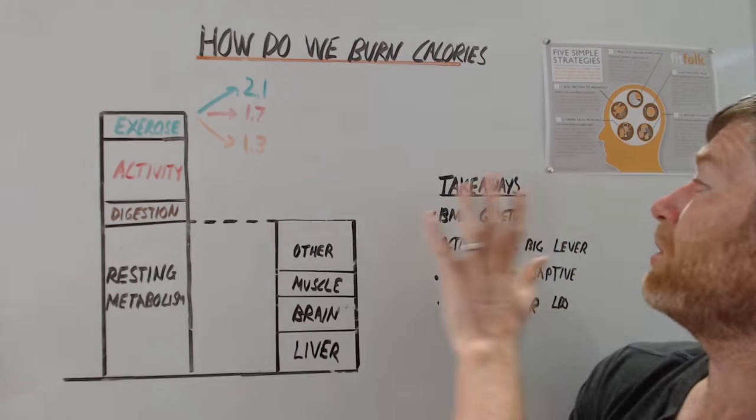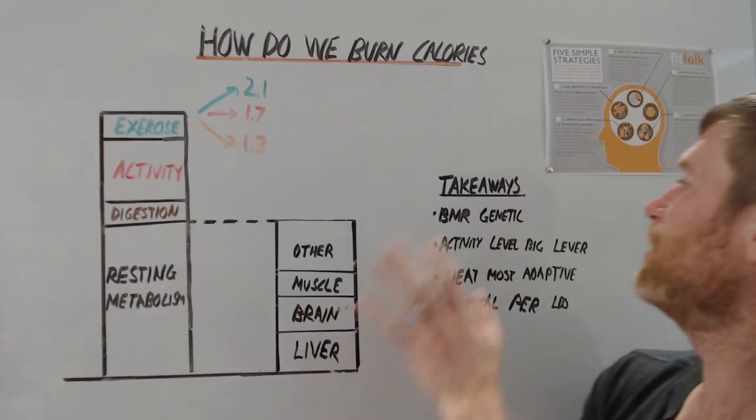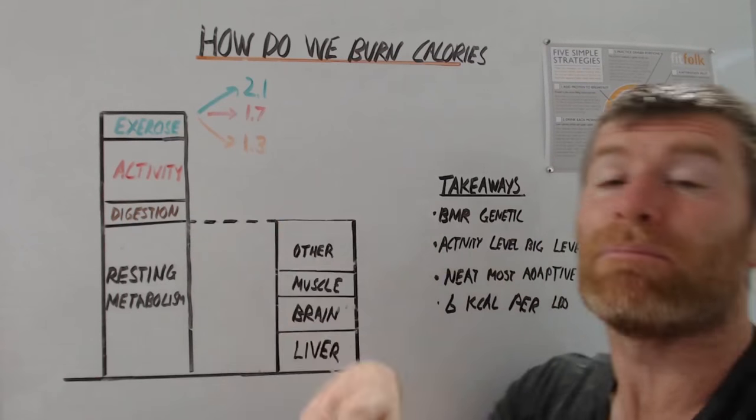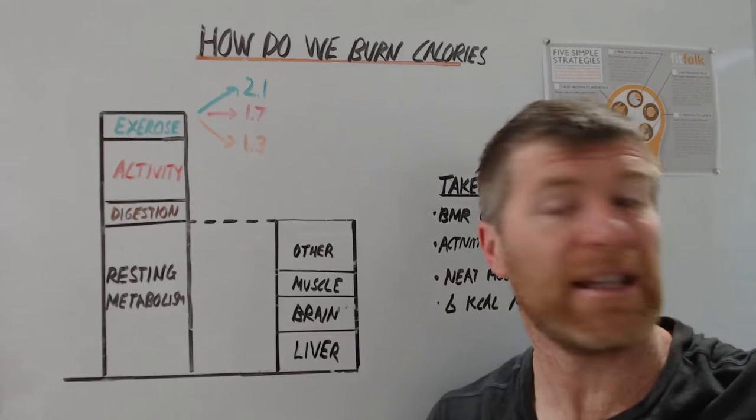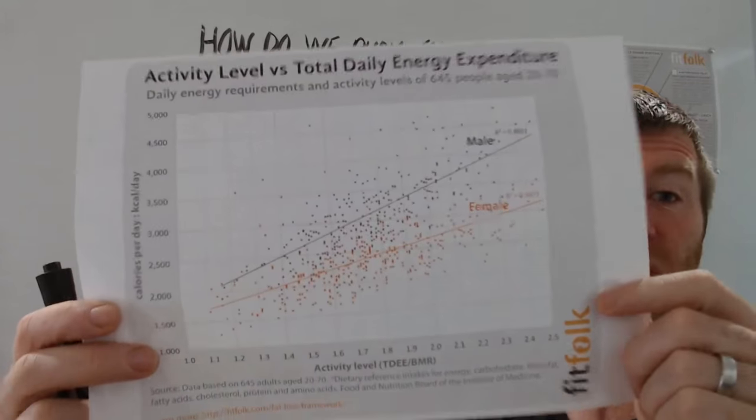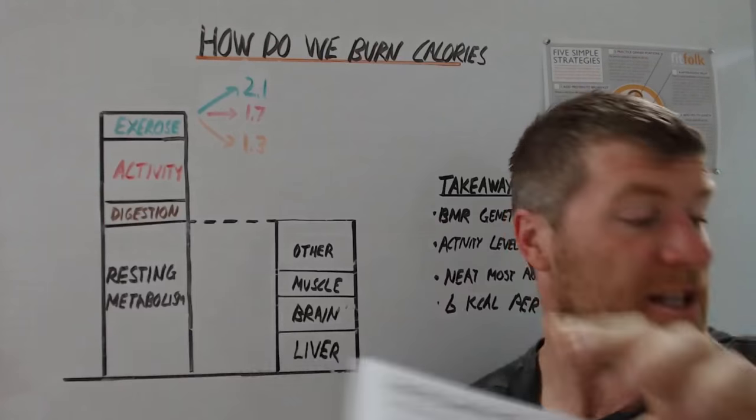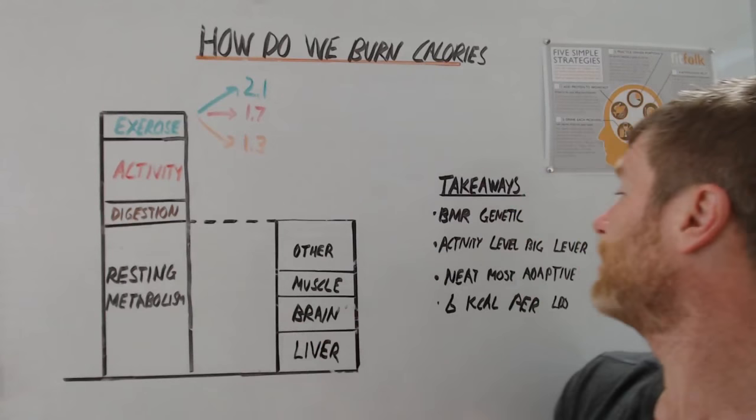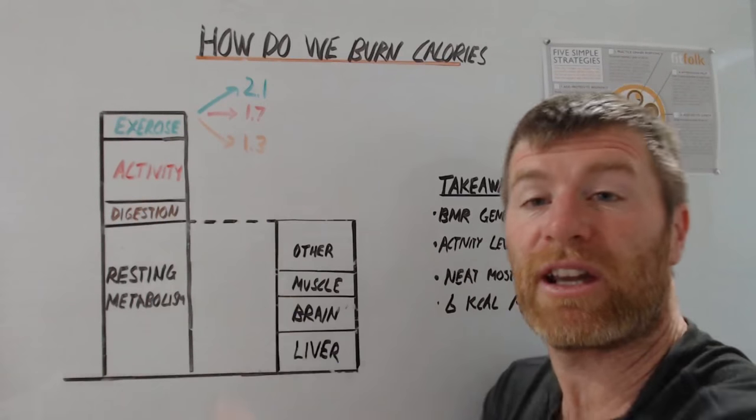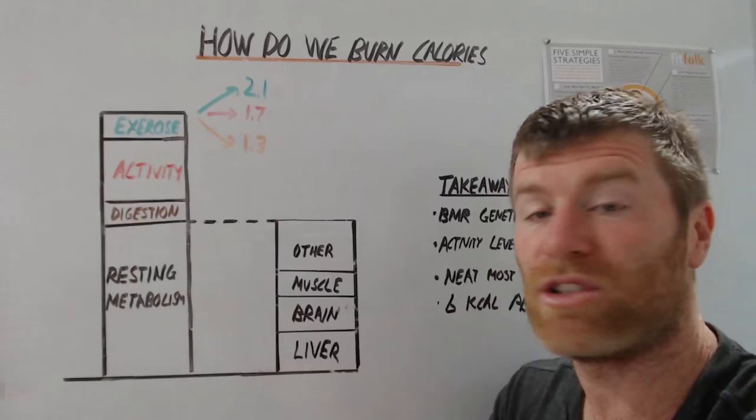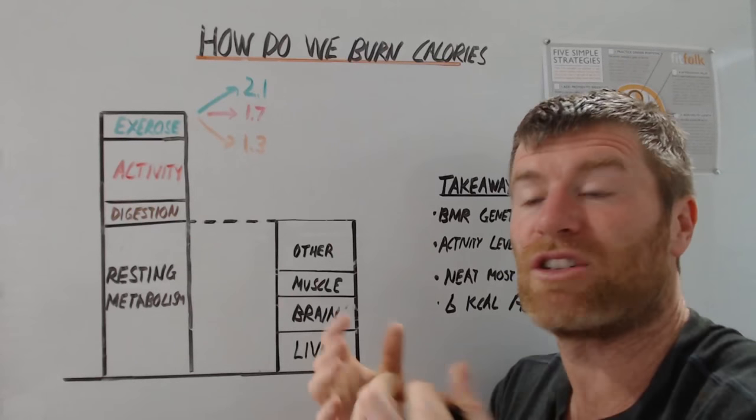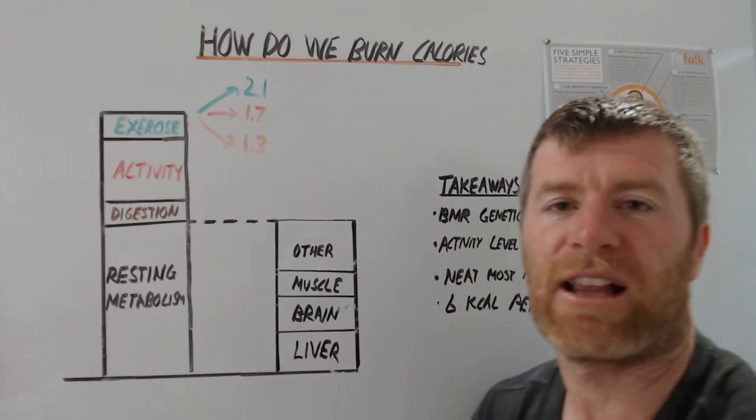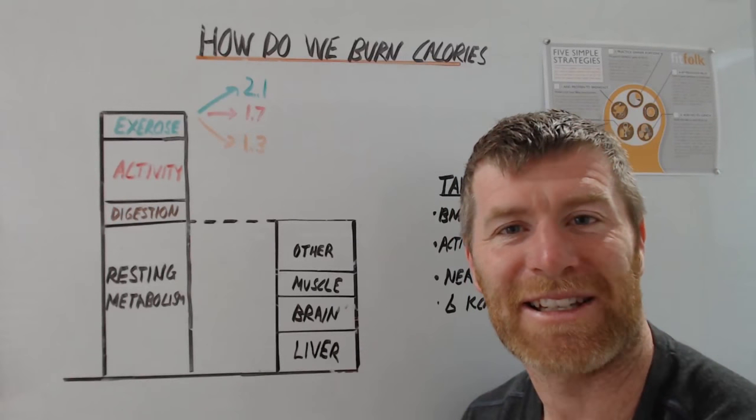So okay, a couple of quick takeaways. The BMR is largely genetic. Activity level is the biggest lever you have to play with. If you can do anything to increase your activity level, that is going to be the thing that increases your energy expenditure and makes the process of losing weight and dieting easier. NEAT is the most adaptive area, so that's the one that changes a lot when you diet - you become more stagnant, you fidget less, it's just the one that really adapts. And the six calories per pound of muscle is just an old wives' tale, it's just a silly old one.